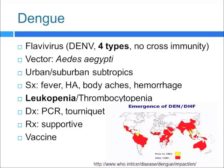Next is dengue. It's a flavivirus with four types, and you can get infected four times if you encounter each different type. The vector is the Aedes aegypti mosquito, found in urban and suburban subtropics. Symptoms include fever, headache, body aches, and hemorrhage. You can see leukopenia on the CBC. Diagnosis is usually by PCR, and you can also do tourniquet testing — you'll see blood vessels rupture causing erythema on the skin. Treatment is supportive, and there's a vaccine showing promise in South America.